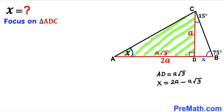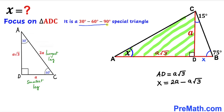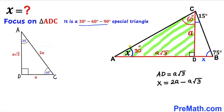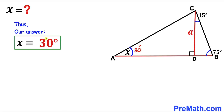Now focusing on right triangle ADC with a right angle at D, its legs are CD = a and AD = a√3, and hypotenuse AC = 2a. This is a special 30-60-90 triangle: the smallest leg CD is a, the longest leg AD is a√3, and the hypotenuse is 2a. Therefore the smallest angle opposite CD is 30 degrees, and angle X = angle CAD = 30 degrees. That's our final answer.